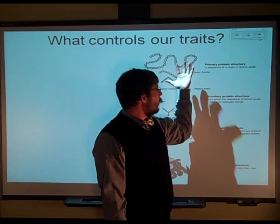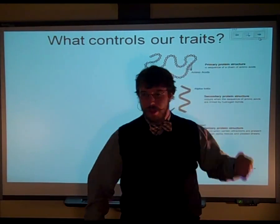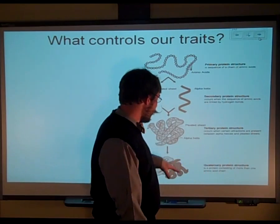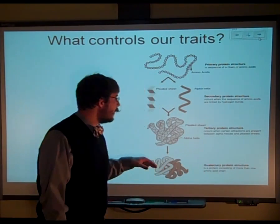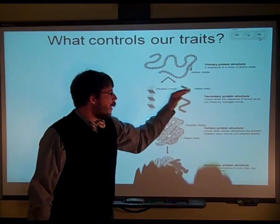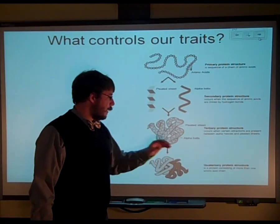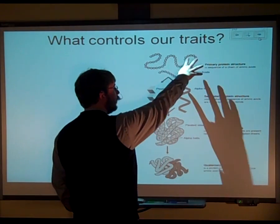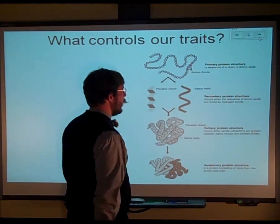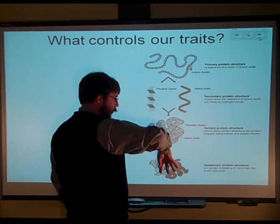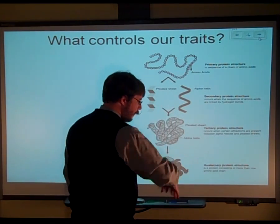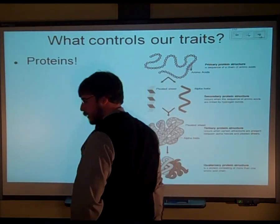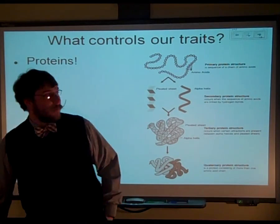So remember, those whole polypeptides coming together to make the proteins — those are what are responsible for our traits. This is just running you through the different levels of structure that they have. Remember this first structure — those are the peptide bonds. You've got the whole hydrogen bonding and other levels of folding down here, which is important for remembering.